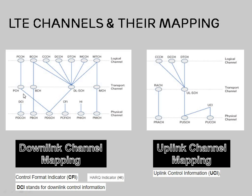In the transport layer we have PCH, BCH, DL-SCH, and MCH. In the physical layer there are some channels that are only present at that layer — this is very important to understand: PDCCH, PCFICH, and PHICH. These three channels are very important but exist only at the physical layer.